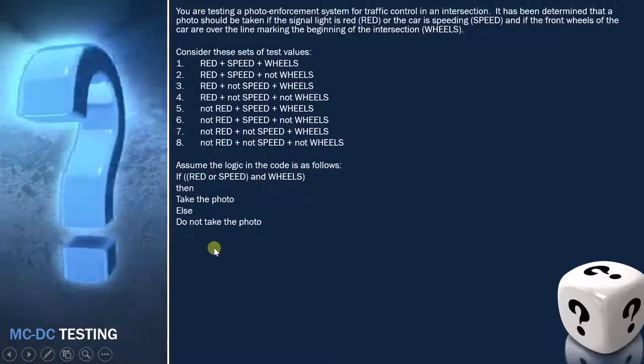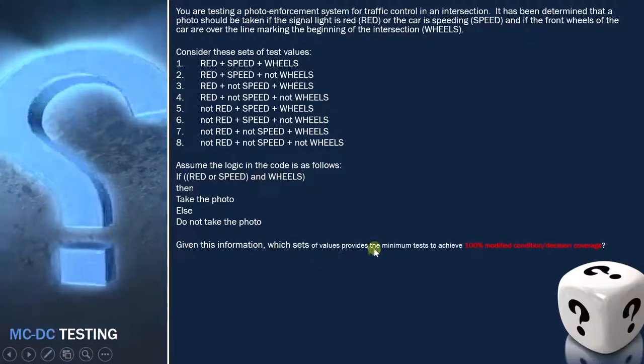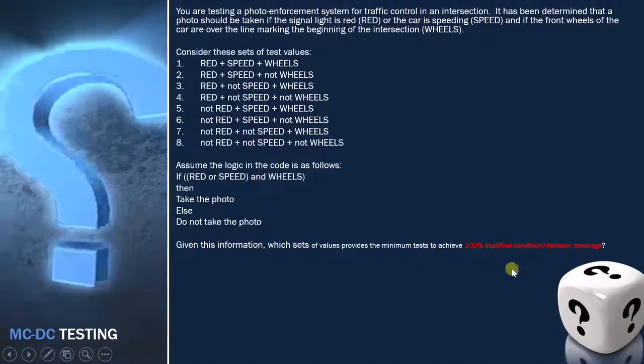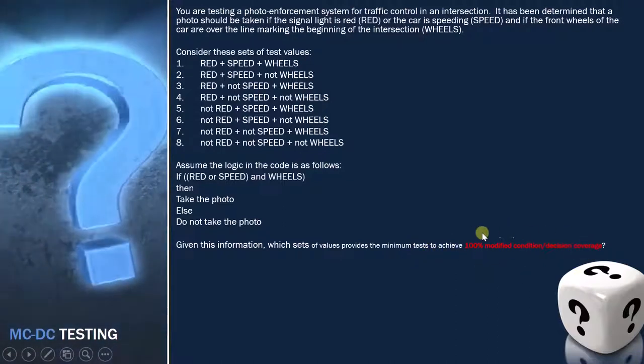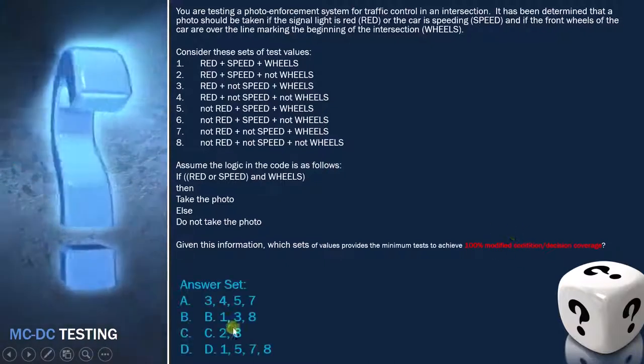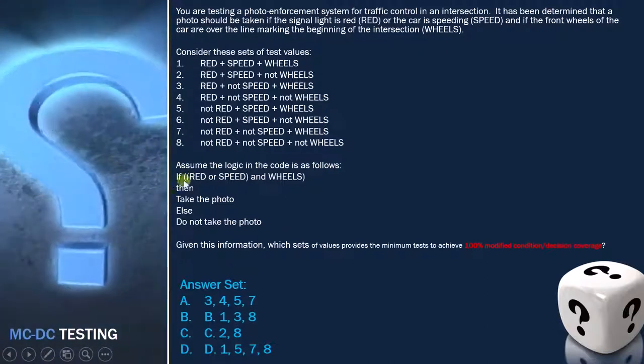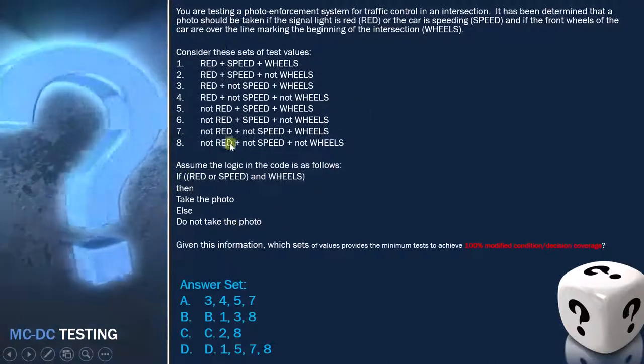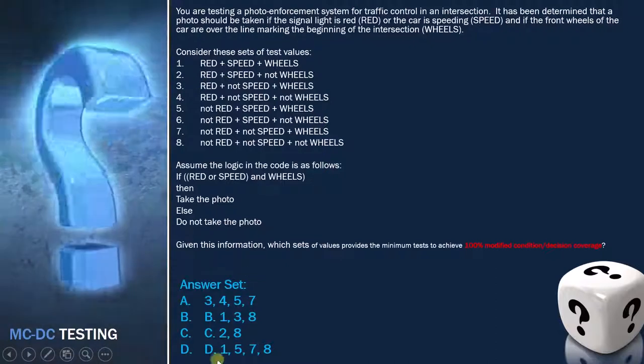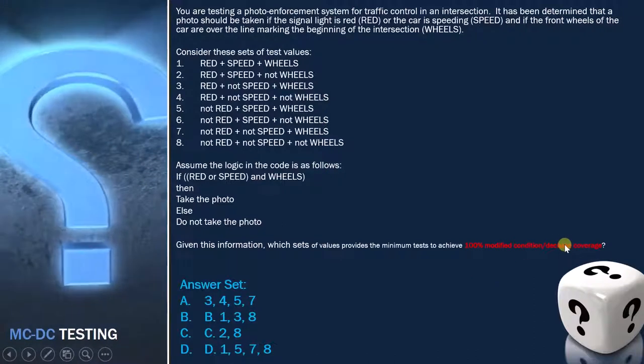The question they are asking you is, given the information, which set of values provides the minimum number of tests to achieve 100% modified condition decision coverage. So remember this word modified and the options given are this. So now we have to analyze this code and then we have to also see this condition in order to know which of these combinations can provide us 100% modified condition decision coverage.